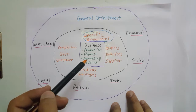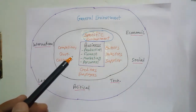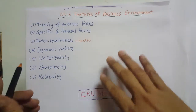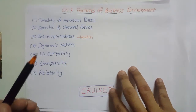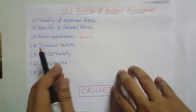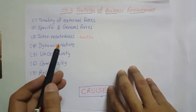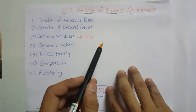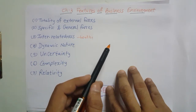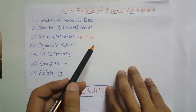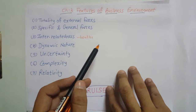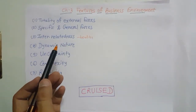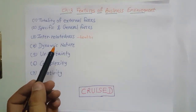Both specific and general forces are included in business environment. The third feature is interrelatedness — all factors in the business environment are interrelated. For example, if government increases tax, people get less money for expenditure, which leads to less demand in the market. So the factors included in business environment are all interrelated.